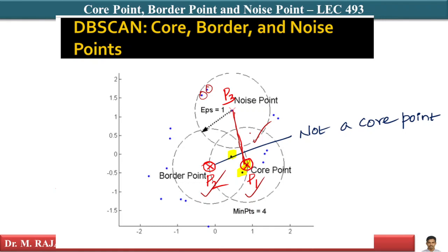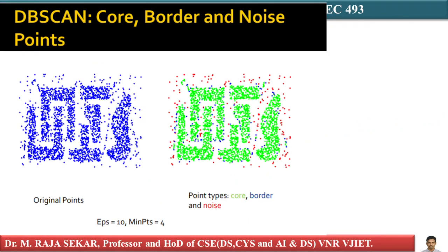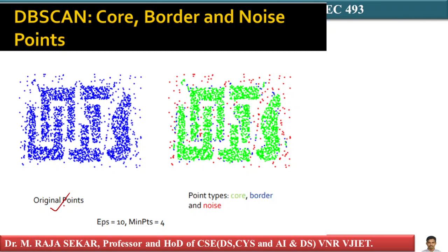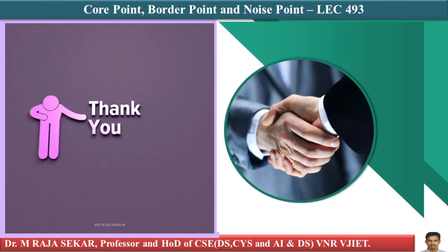Imagine this is your original data. All your core points are the green points — they are within the dense region. The border points are bordering the core points. The noise points are outside the dense region. This is the fundamental idea of what a core point, border point, and noise point are. I will continue the discussion in lecture number 494. Thank you.